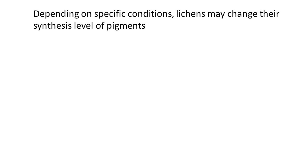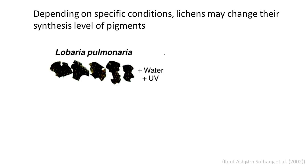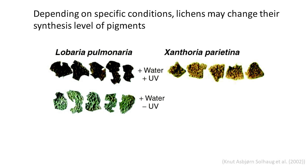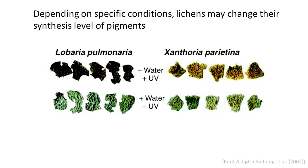Depending on specific conditions, lichens may change their synthesis level of pigments, leading to quite different coloration of the same lichen body. For example, dehydrated lichen Lobaria pulmonaria exposed to UV light began to form melanins within a week, and by the end of the experiment the lichen body was dark brown. In contrast, a hydrated lichen body not exposed to UV light didn't develop melanin and exhibited a deep green coloration. The same color dynamics were observed in Xanthoria parietina — UV exposure activated the synthesis of parietin, while lichen not exposed to UV radiation stayed green.